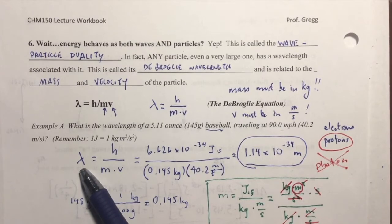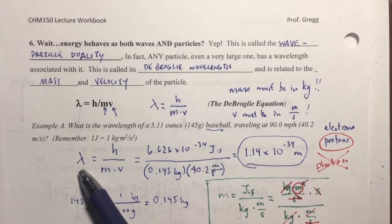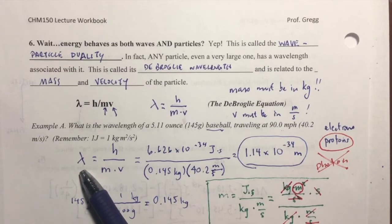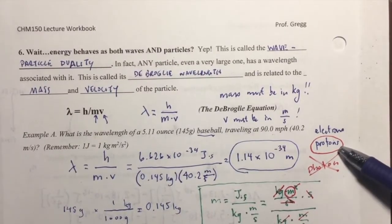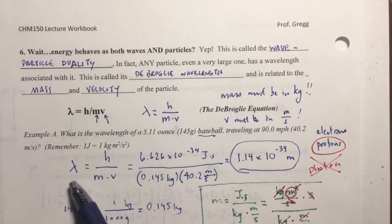And so, the wavelength for an electron starts to become significant. It becomes about the size of 1 times 10 to the minus 10th meters, and at that point, you're getting about the size of an atom itself. And so, when we're dealing with electrons and protons, their de Broglie wavelengths are significant.